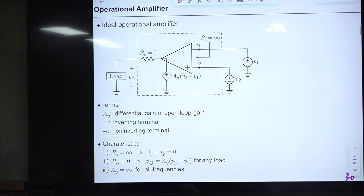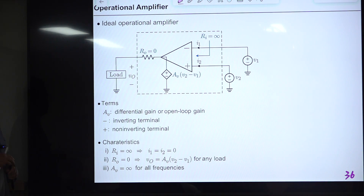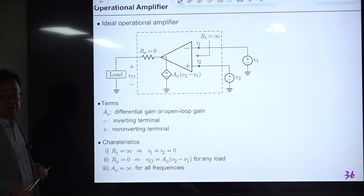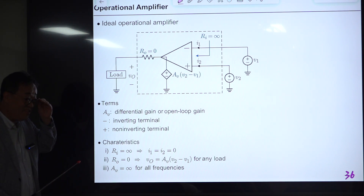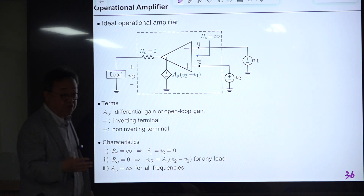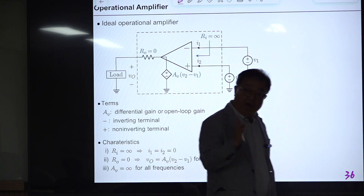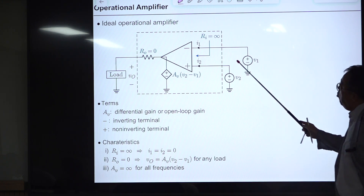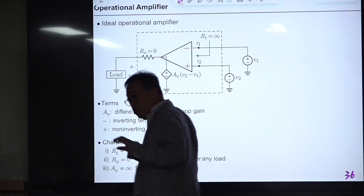We summarize some operational amplifier features because we will be using op-amps. An ideal operational amplifier is an imaginary conceptual device. We study it because it helps understand the behavior of real practical op-amps, and for most applications — about 95% — assuming ideal op-amp behavior is sufficient and accurate enough.